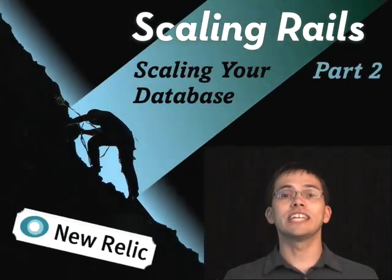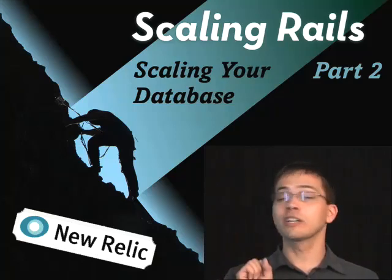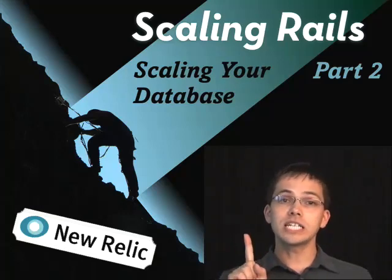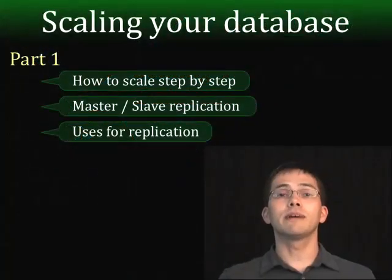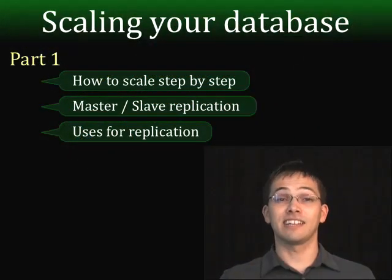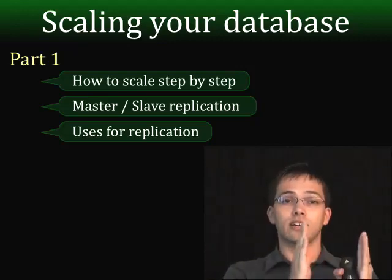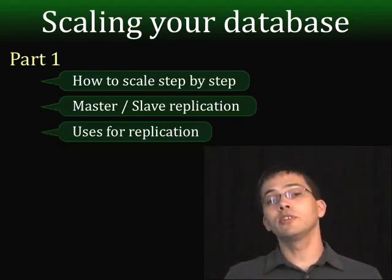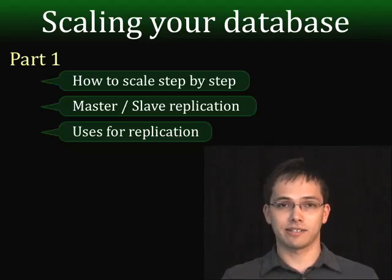Hello, I'm Greg Pawlik and you're watching the 18th episode of the Scaling Rails screencast series sponsored by New Relic. This is the second episode where we're going to be taking a look at scaling your database. In part 1 we learned about scaling our database vertically by upgrading our server hardware, scaling it horizontally by adding additional slave databases, and we learned about a couple other uses for replication, like backups and background processes.